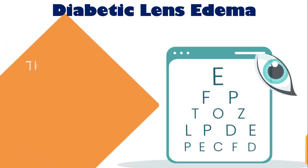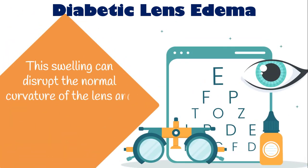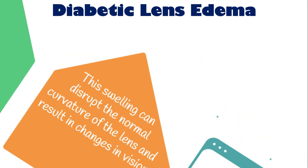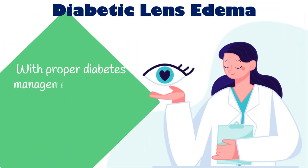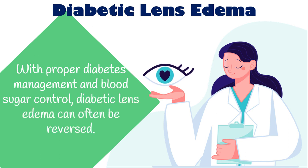This swelling can disrupt the normal curvature of the lens and result in changes in vision, such as blurred or distorted vision. However, with proper diabetes management and blood sugar control, diabetic lens edema can often be reversed.